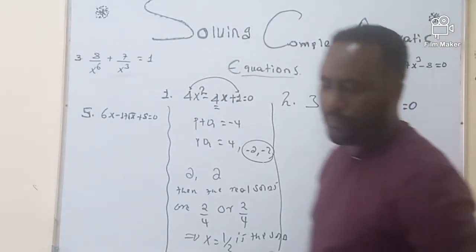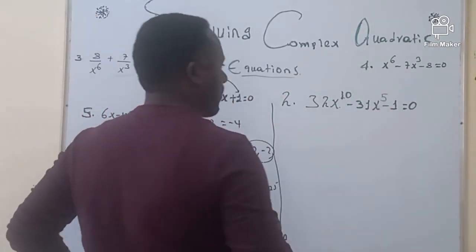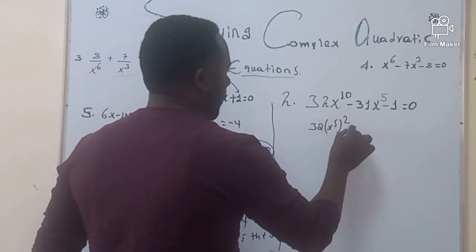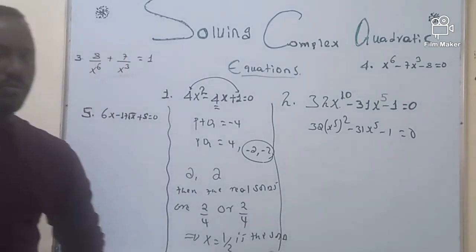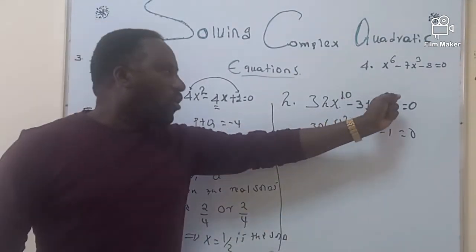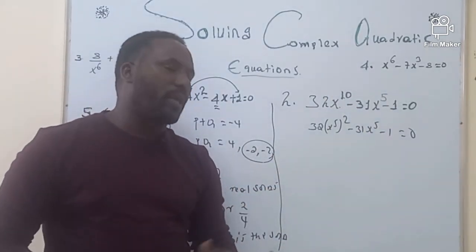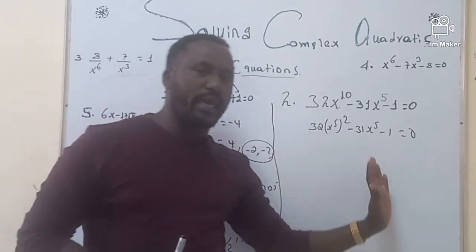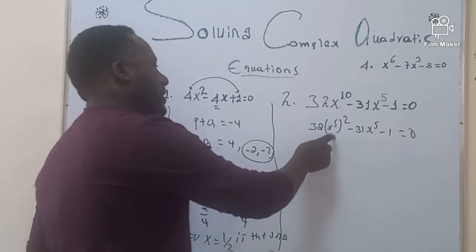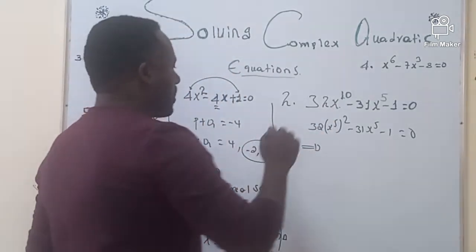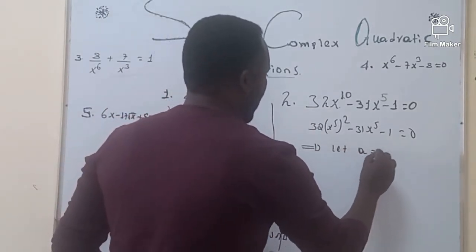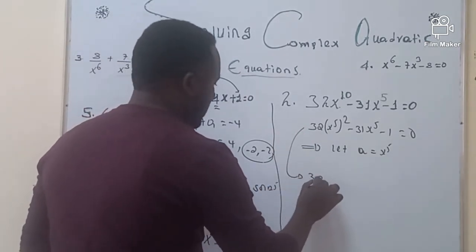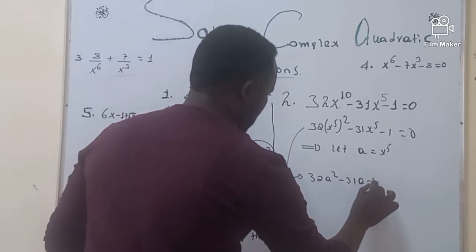Now let's see the second problem — a complex quadratic. We describe it in quadratic form: x raised to 5 whole squared minus 31 times x raised to 5 minus 1, which equals 0. If the exponent of one variable is a multiple of another exponent of the variable, it can be solved as a quadratic case. Let A equal x raised to 5, then the equation becomes 32A squared minus 31A minus 1 equals 0.